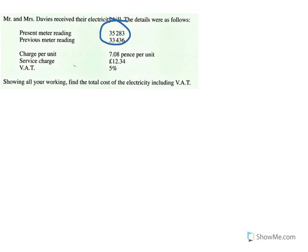The first thing we need to do is look at these numbers here. Generally in these questions there will be a present reading and a previous reading. We need to take these away — you always take the smaller one away from the bigger one. You take those two numbers away and you should get 1,847 units.